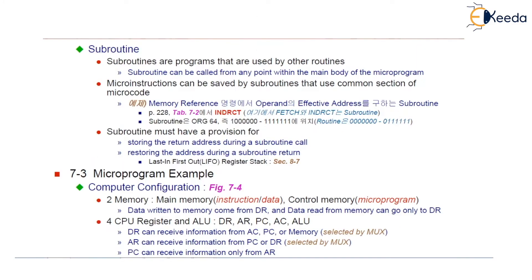A subroutine is actually needed when a main routine calls it. There are two functions, f1 and f2. When f1 calls f2, f2 could be the subroutine for f1. Once after f2 is finished, there will be a return to f1, after which f1 will resume its execution. But why does the control memory require subroutines? Why does the micro-programmed control unit facilitate subroutines? Let us understand.